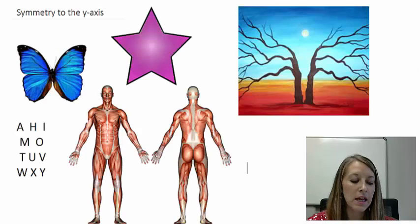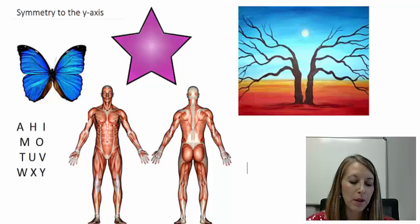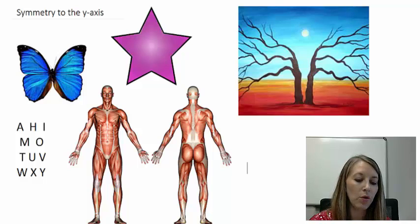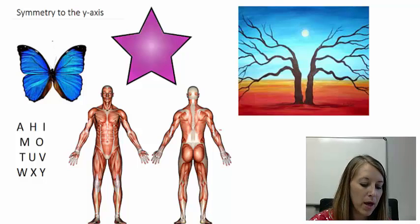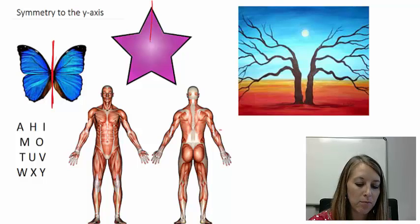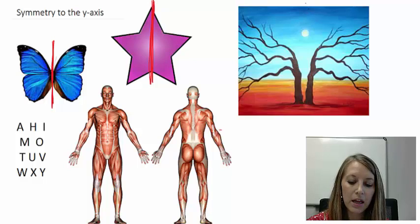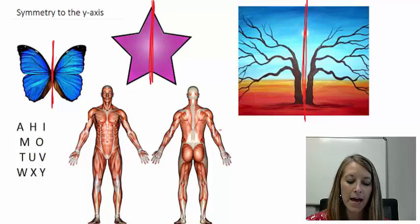The first way is it can be symmetric to the y-axis. I've given you plenty of pictures here that we see in day-to-day life of where something is symmetric to the y-axis, meaning if I were to fold it over the y-axis, it would match on both sides. I could fold my butterfly over my y-axis and it would be the same. I could fold my star over this vertical axis and it would be the same. I could fold this tree picture over my vertical y-axis and it would match.